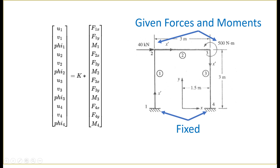12 equations can solve for exactly 12 unknowns. However, there are 24 variables — 12 displacement variables and 12 force and moment variables. This is where boundary conditions come in. Nodes 1 and 4 are fixed, so displacements in x, y, and angular displacements for those nodes are zero, accounting for six values. The other six values are the given forces and moments at nodes 2 and 3. Now let's program it into MATLAB.